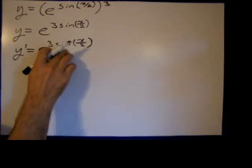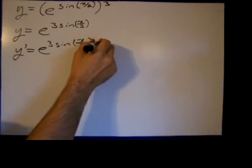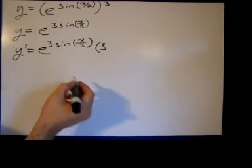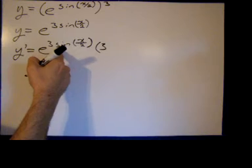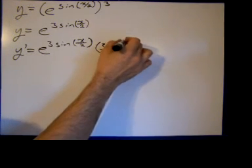Now we take the derivative of the exponent, which is 3 sine of x over 2. Well, 3 is just a constant, so it stays. So we take the derivative of the sine of x over 2, which is the cosine of x over 2.